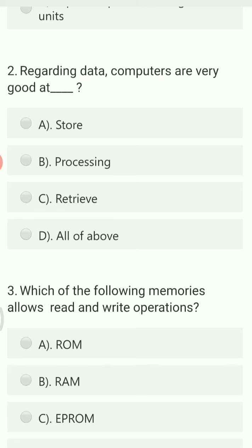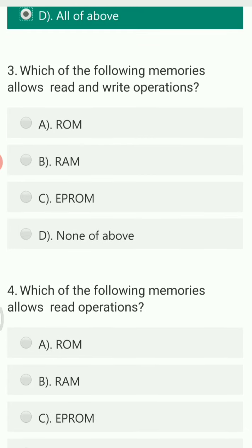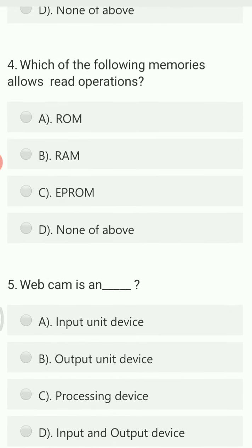All the above things can be done very nicely with the help of computers, so option D is the right answer. Which of the following memories allows read and write operations? RAM stands for Random Access Memory, which allows both reading and writing in memory, so RAM is the right answer.